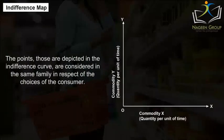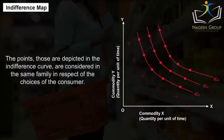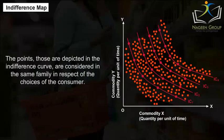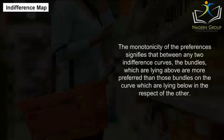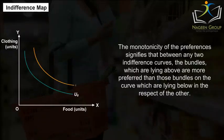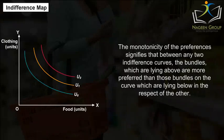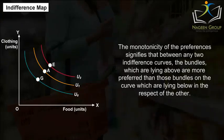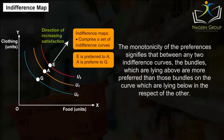Indifference Map. The points depicted in the indifference curve are considered in the same family with respect to the choices of the consumer. The monotonicity of preferences signifies that between any two indifference curves, the bundles which are lying above are more preferred than those bundles on the curve which are lying below.